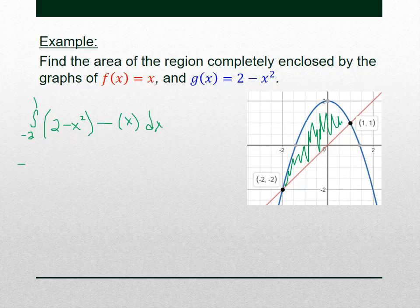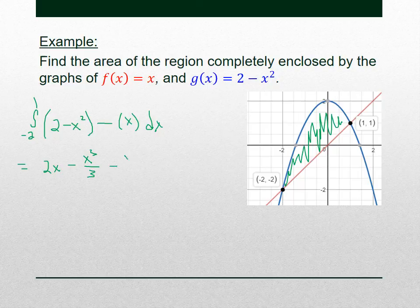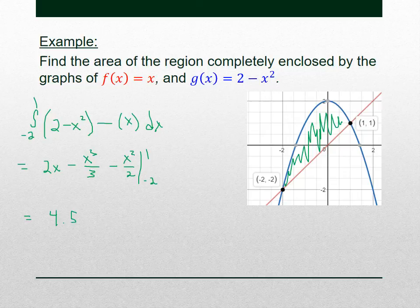Taking the antiderivative: 2x − x³/3 − x²/2, evaluated from −2 to 1. When you plug in 1 and plug in −2, your final answer should be 4.5, or 9/2. That's the area of the region completely enclosed by those two graphs.